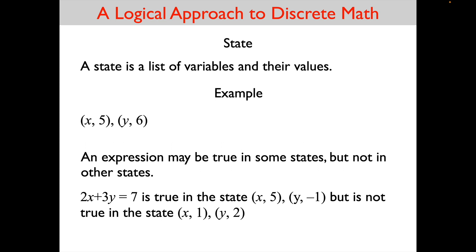From your knowledge of algebra, if x has the value 5 and y has the value negative 1, this expression is true. That is because 2 times 5 is 10, 3 times negative 1 is negative 3, and 10 minus 3 does equal 7. So that is true in that state. But if you plug in the value 1 for x and 2 for y, then 2 times x plus 3 times y does not equal 7. So this expression is true in some states but not in other states.